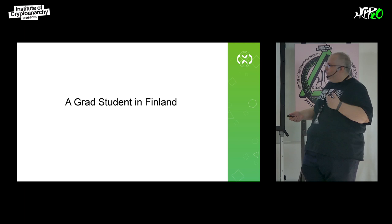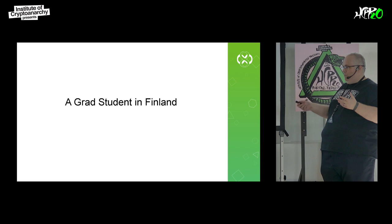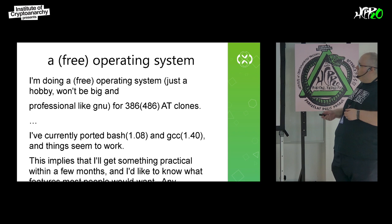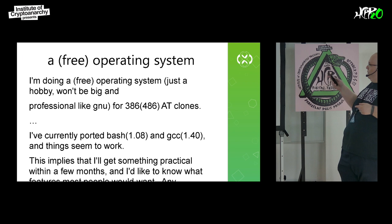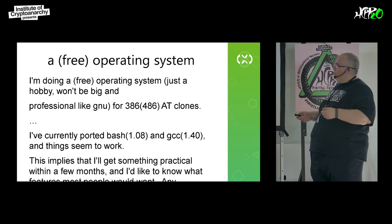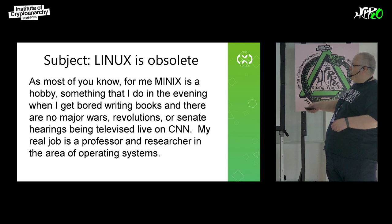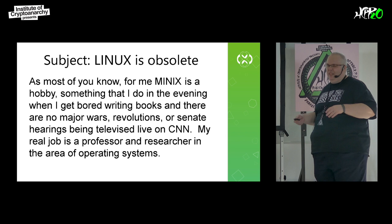There's this grad student from Finland. In 1991, he decided he wanted to build his own operating system. He had been using a Unix-like operating system called Minix, but it was closed source and he wanted his own. And he wrote: 'I'm doing a free operating system. Just a hobby. Won't be big or professional like GNU. For 386 and 486 clones. I've currently ported bash and GCC and things seem to work. This implies I'll get something practical within a few months. I'd like to see what people want and if there are any suggestions.' This is Linus Torvalds, by the way. Within days, the response was 'Linux is obsolete.' Famous last words.